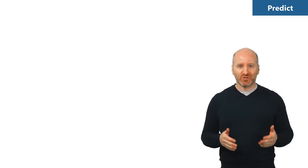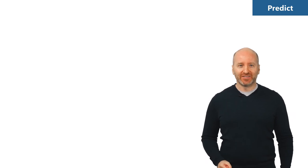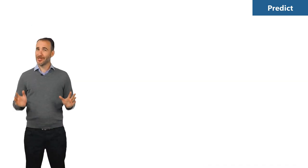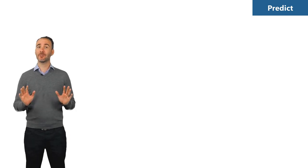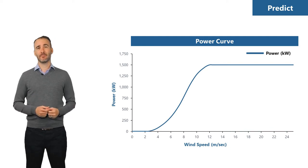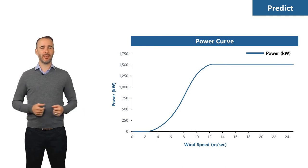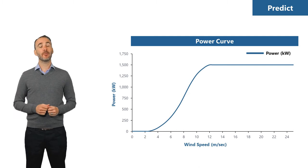To forecast megawatt hours of energy generation, we need to understand the relationship between wind speed and the turbine's capacity to generate energy. This information is contained in a power curve specific to each turbine model. A power curve is a graph showing generation capacity at different wind speeds — wind speed on the horizontal axis in meters per second, and generation capacity on the vertical axis in kilowatts. By aligning the wind speed forecast (hours per year) with the power curve (kilowatts), we can forecast total kilowatt hours per year.